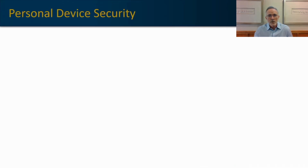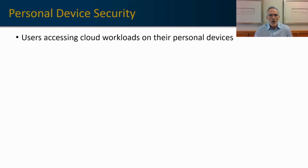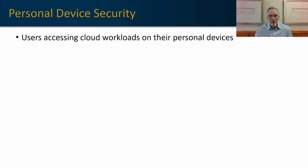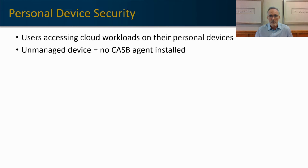Our first use case is personal device security and control. When our employees are using their personal devices — this is a fundamental concept of SASE, Secure Access Service Edge, where Gartner defines SASE as the ability of users to use any device from any location on any network to access their workloads. Allowing employees, contractors, or vendors to access cloud environments we may control has a lot of benefits, but there's also a limitation: we are not managing that device, it's not a corporate device, and we cannot put an agent on it generally.